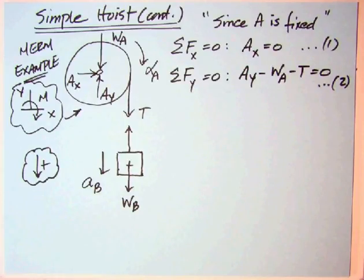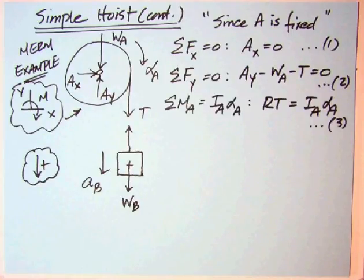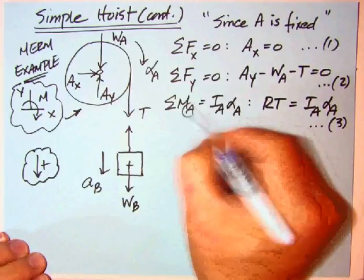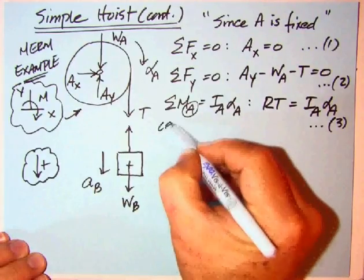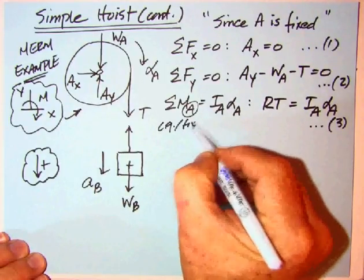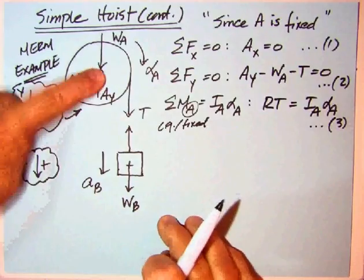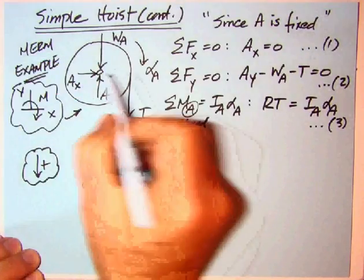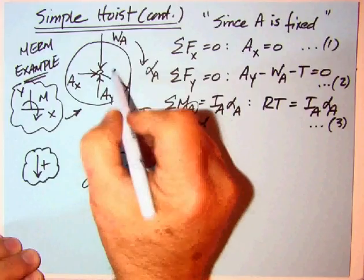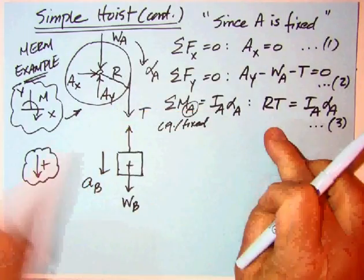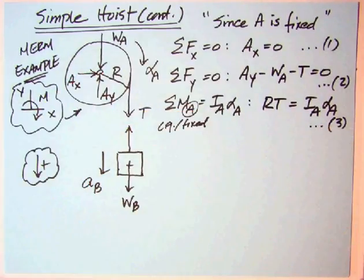We would use that to design the axle, the bearings, and things like that. We don't need it for here, but we certainly write them down, equations one and two. Now we're going to take moments. Our choices are either the center of gravity or fixed point. We're in luck because point A fits both. Let's do that moment with clockwise positive. R times T is clockwise, and that equals IA times alpha. There's our equation number three.